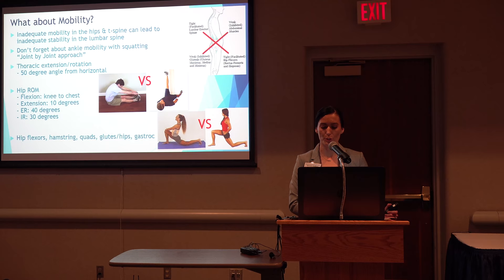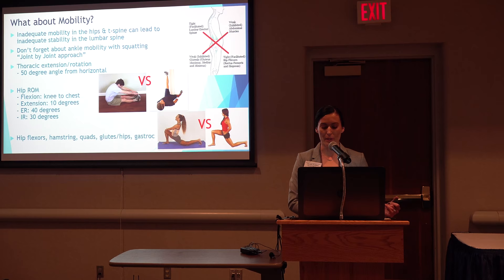Here we have two hip flexor stretches. The lunge variation is in a nice neutral spine, while the other one commonly seen is causing so much extra stress on the lumbar spine. Another example of why we like to stretch the hamstrings in supine — you can see the pelvis position in the long seated stretch. Quadriceps stretches too are often performed with a lot of extra stress on the spine with hyperlordosis.